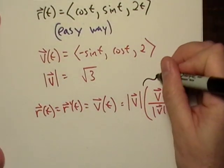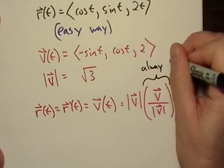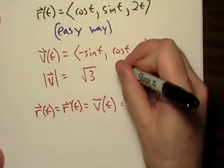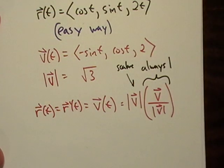Now remember, this part right here is always one. It's worth always one. And then you have your scalar multiple right there, okay?